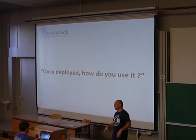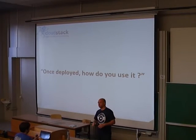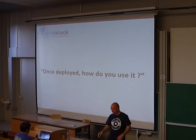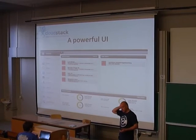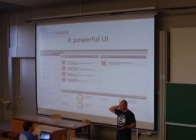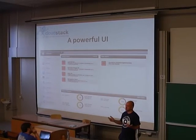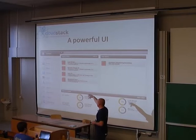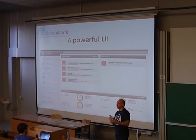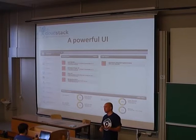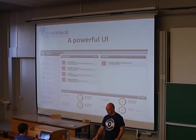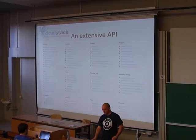Once you've deployed your cluster with hypervisors, storage, and networking, how do you use it? There is a powerful UI that comes with CloudStack — it's always been there. The UI talks directly to the API. You can manage your image catalog, templates, start instances, create different types of network offerings, and configure the cloud. You can do almost everything through the UI. Sometimes a feature is developed and you use the API directly first, and then the UI integration comes later.